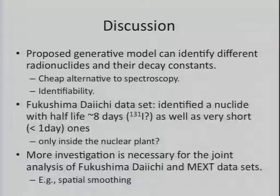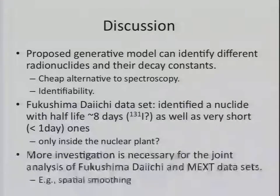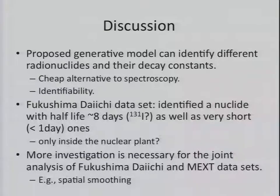Two events detected here probably correspond to rainfall on the 21st and 23rd of March. To summarize: we have proposed a generative model and Bayesian inference algorithm for inferring the model and identifying different types of radionuclides. This has been checked on synthetic data and supported by mathematical analysis. You can consider this a cheap alternative to spectrometry — just using Geiger counter data. In the Fukushima data we identified a nuclide with roughly an eight-day half-life, corresponding to iodine-131, and two components with very short decay. We need more investigation, and for global data we definitely need spatial smoothing in the model.